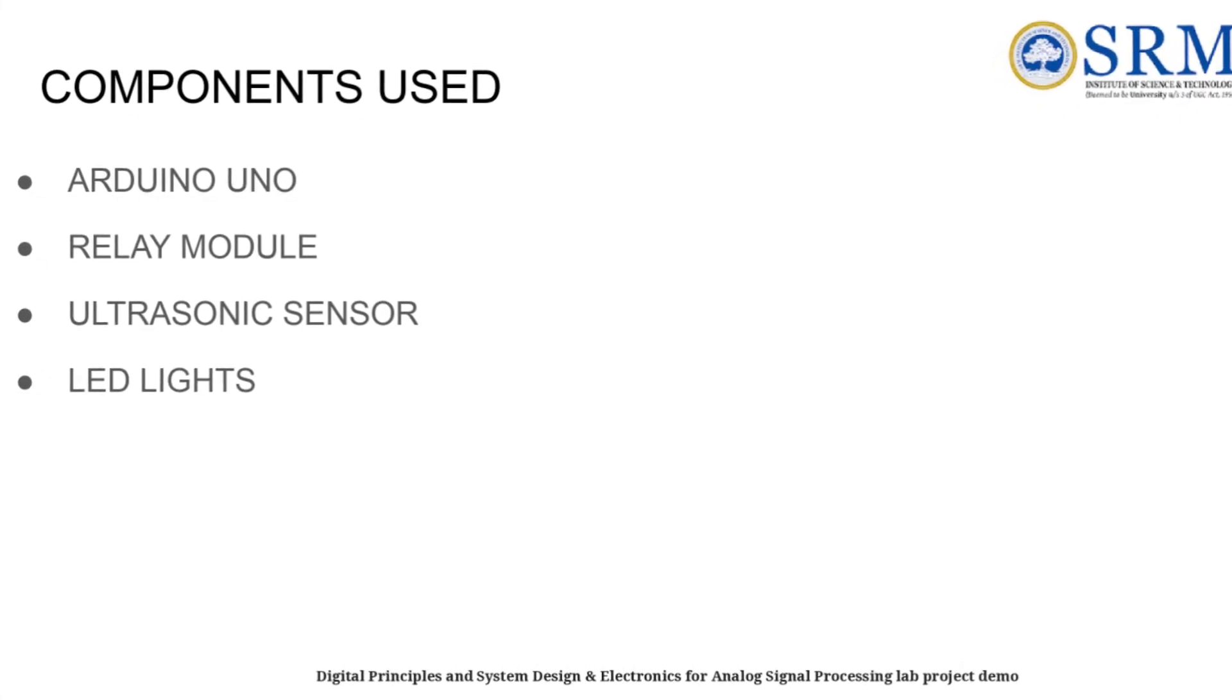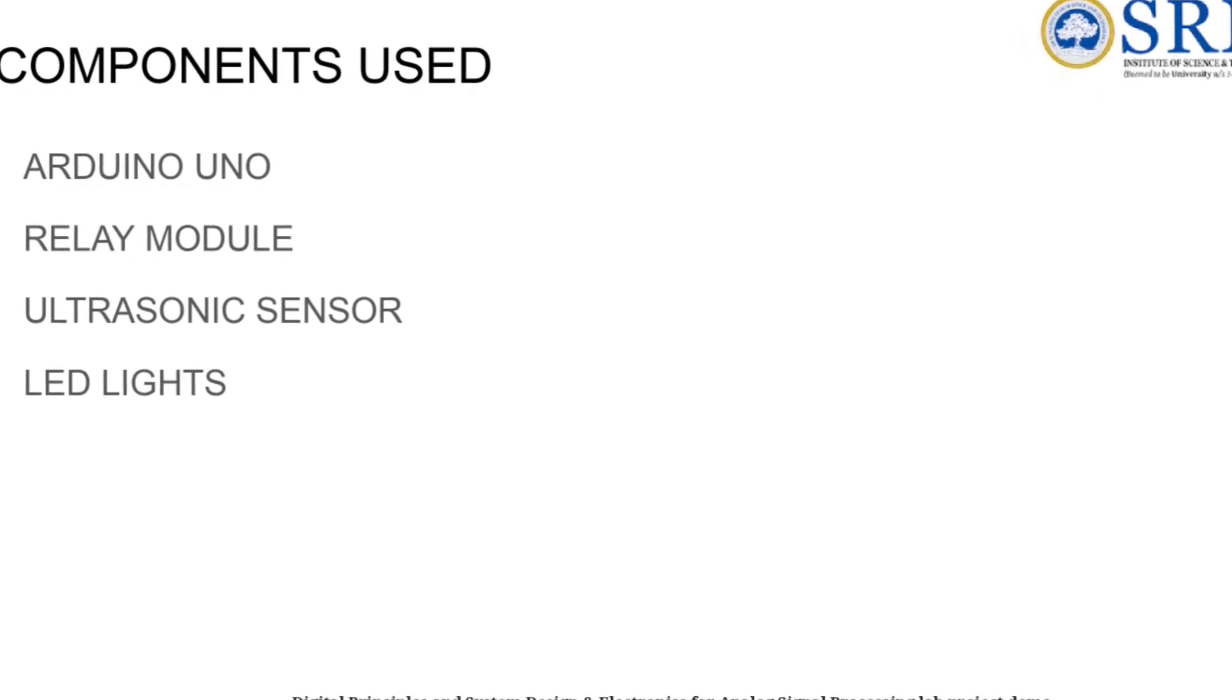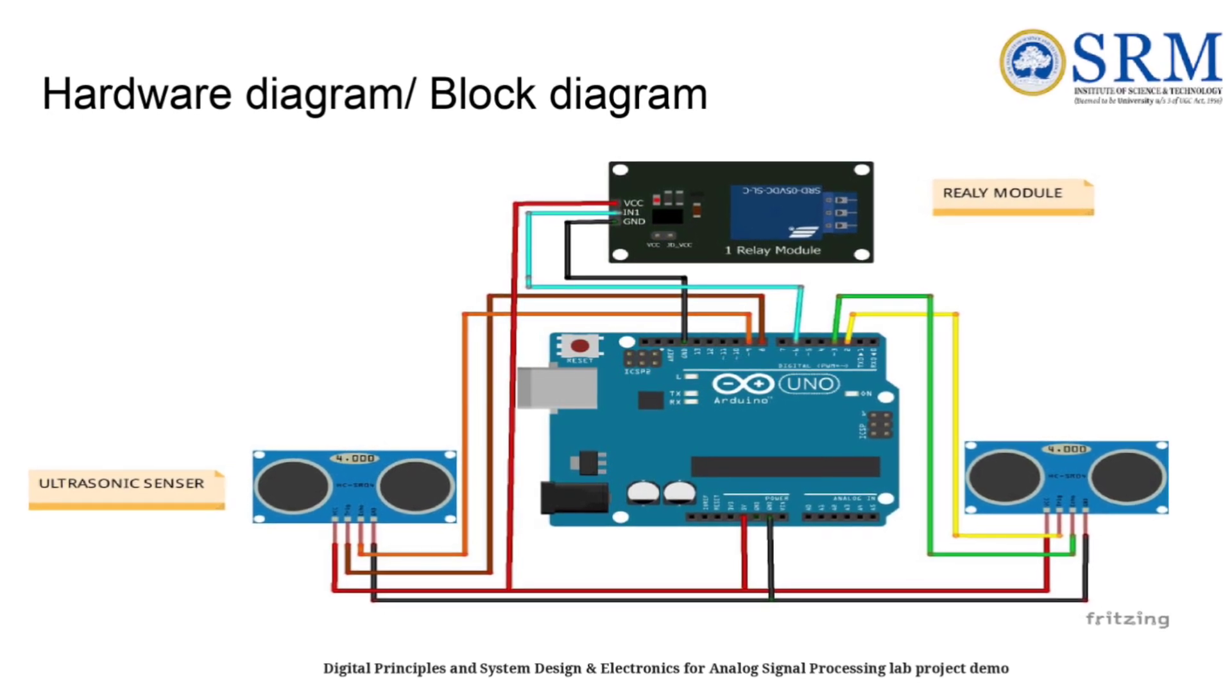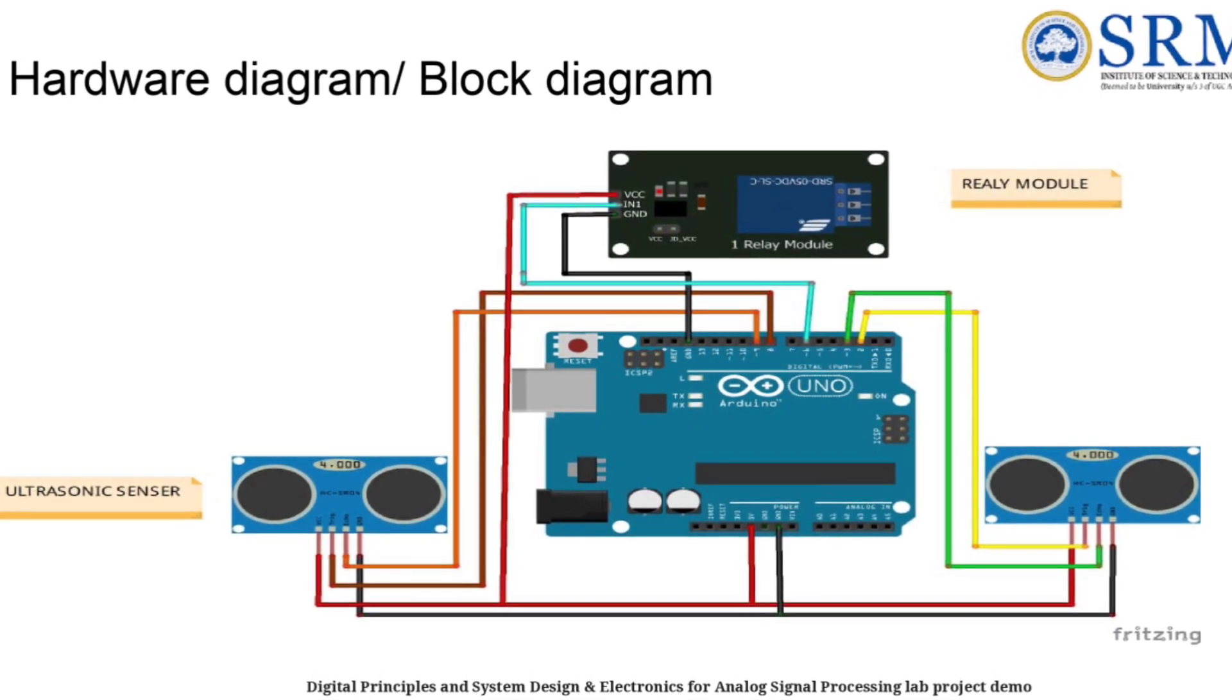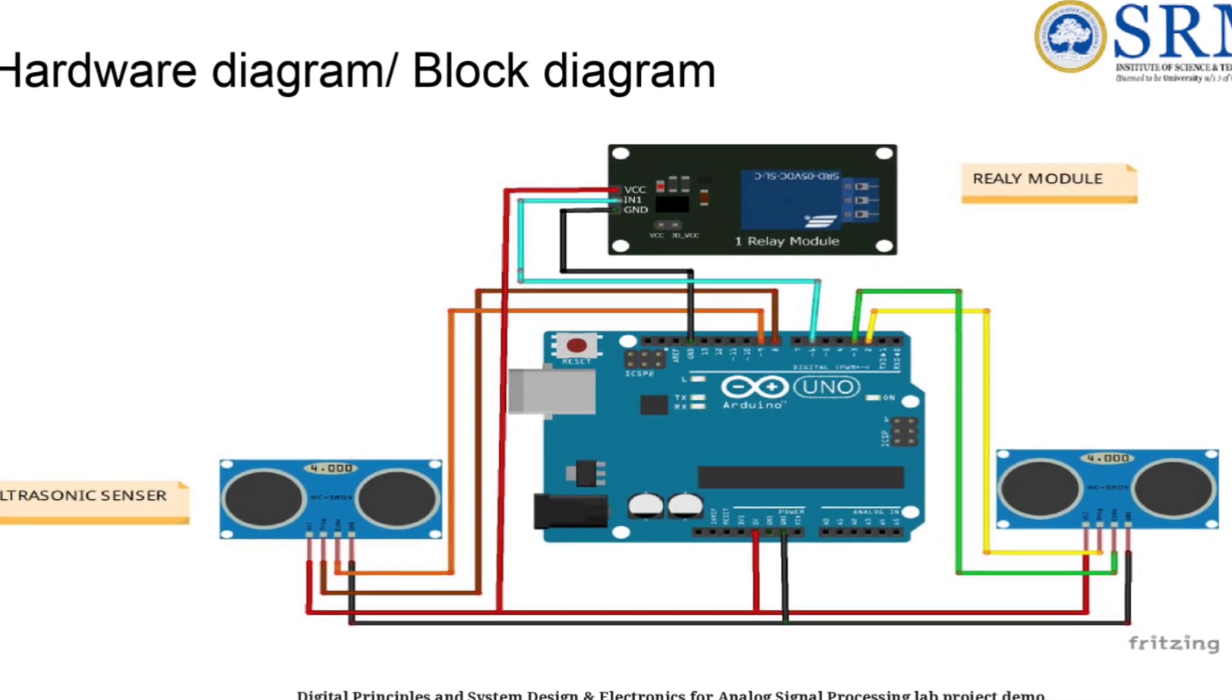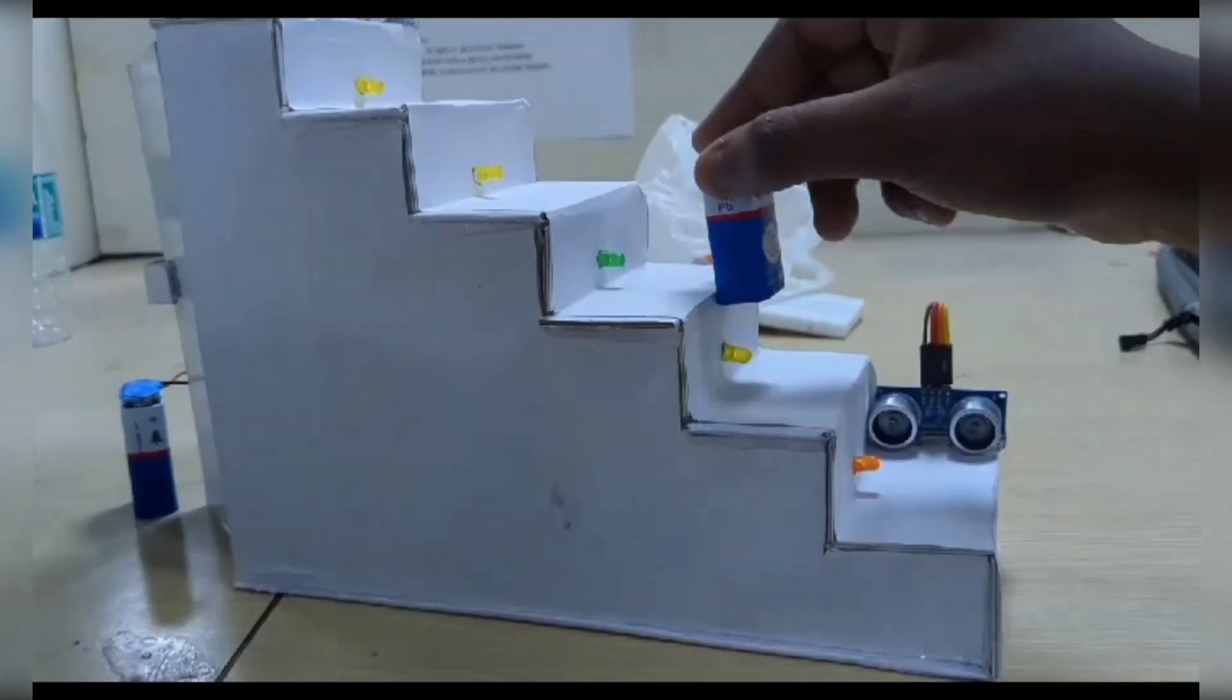The components are Arduino, relay module, ultrasonic sensor, and LED lights. Arduino UNO acts as a controller and is connected with two ultrasonic sensors and a relay module. The ultrasonic sensor detects motion and then responds to the controller. The relay module acts like a switch and LED lights are used as the light source in the stairs.